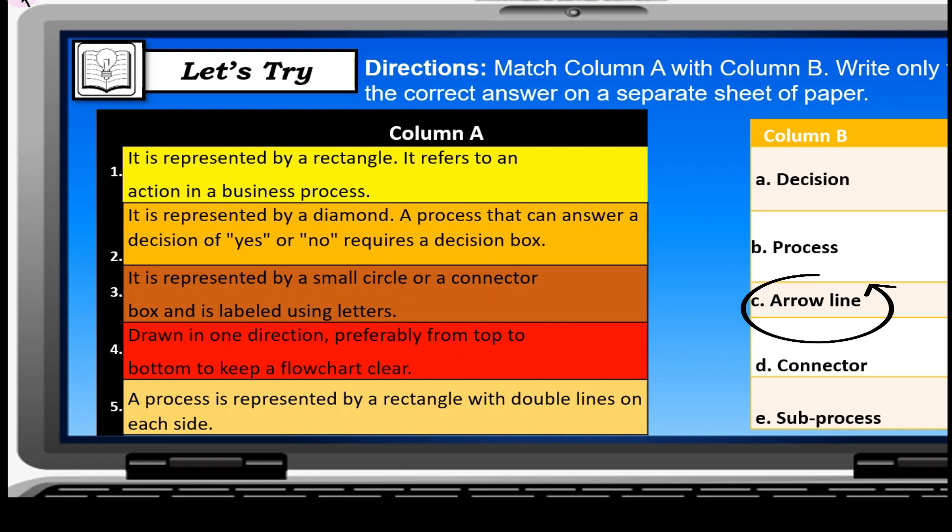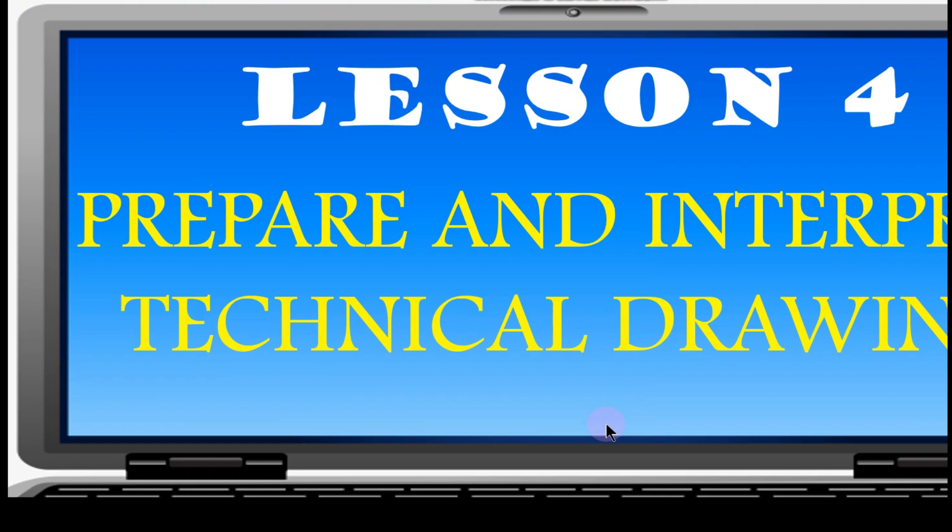Yes, the answer is C, arrow line. Number five: A process is represented by a rectangle with double lines on each side. Yes, the answer is letter E, subprocess. Okay, we're now in lesson four and the topic in lesson four is to prepare and interpret technical drawing.